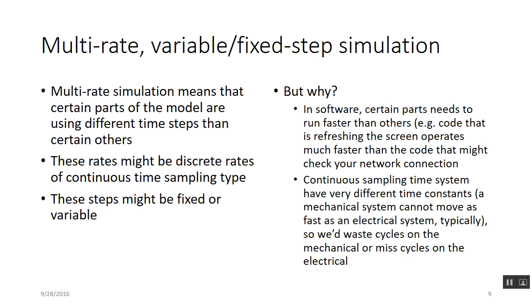Multi-rate just means the model contains different rate groups. Maybe this sensor is a temperature sensor — we don't have to sample that at a kilohertz because temperature doesn't change that fast. But maybe there's some position thing you're monitoring that can move super fast and you've got to sample that really fast. So different parts of the model run at different rates.